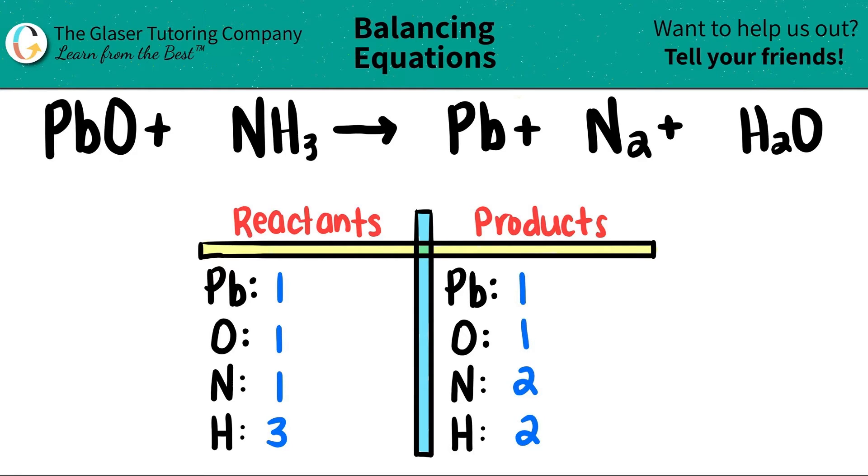So there's a little trick here. Always leave balancing the elements that are by themselves last. So in this case, I don't really want to necessarily balance Pb first or nitrogen, because those I can always balance at the end. Elements that are by themselves, you could always just balance them quickly at the end. So we have a choice between oxygen and hydrogen. Oxygen is already balanced at the moment, so I'm going to balance the hydrogen.